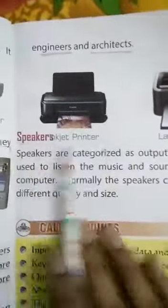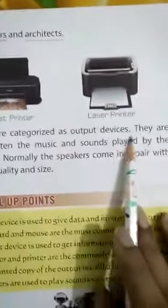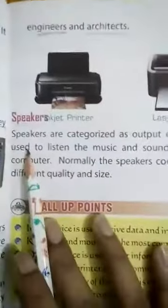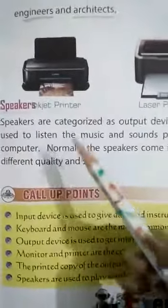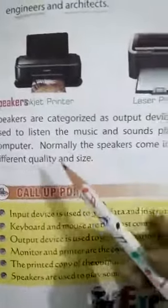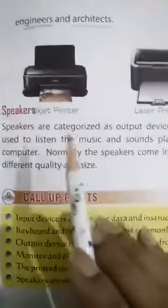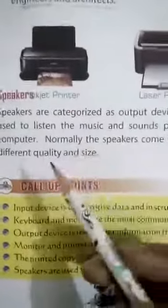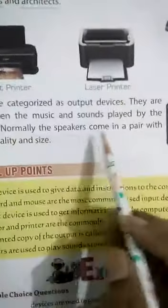The next topic is speakers. Speakers are categorized as output devices. They are used to listen to the music and sounds played by the computer. They give us the output of sound — whatever music or sound the computer plays, you can hear from the computer. You have all seen speakers, and there will also be speakers in your house.